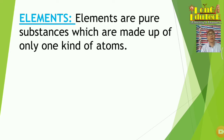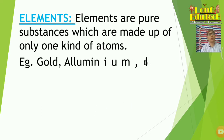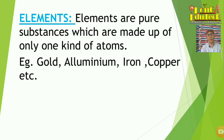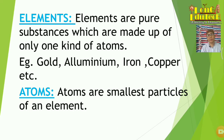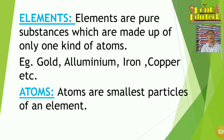Elements are pure substances made up of only one kind of atom. Examples include gold, aluminum, iron, copper, etc. Atoms are the smallest particles of any element. When we keep dividing a substance into smaller and smaller pieces, there comes a point where we cannot divide it further, and that particle is called an atom. Atoms cannot be seen by the naked eye.